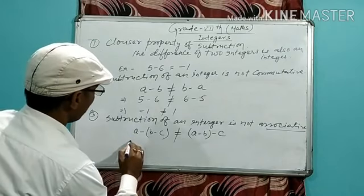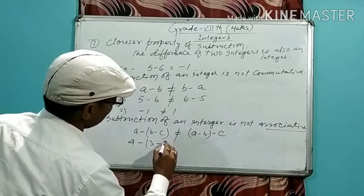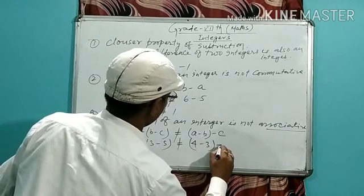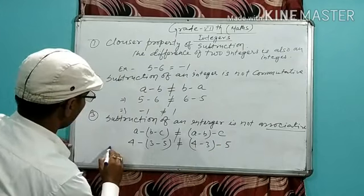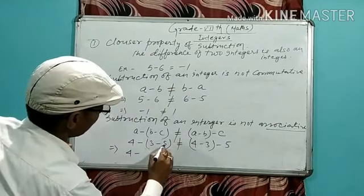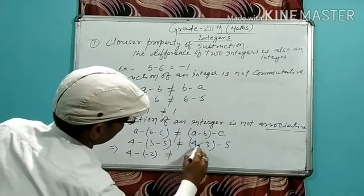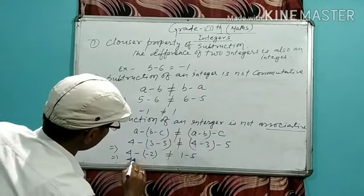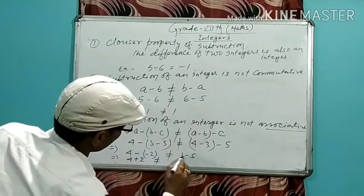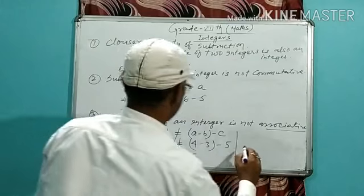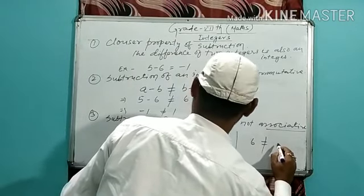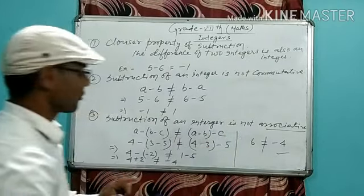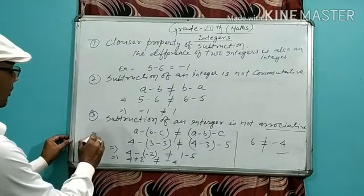Let a = 4, b = 3, c = 5. Then a minus (b minus c) = 4 minus (3 minus 5) = 4 minus (minus 2) = 6. And (a minus b) minus c = (4 minus 3) minus 5 = 1 minus 5 = minus 4. So 6 is not equal to minus 4. It is clear that subtraction of integers is not associative.